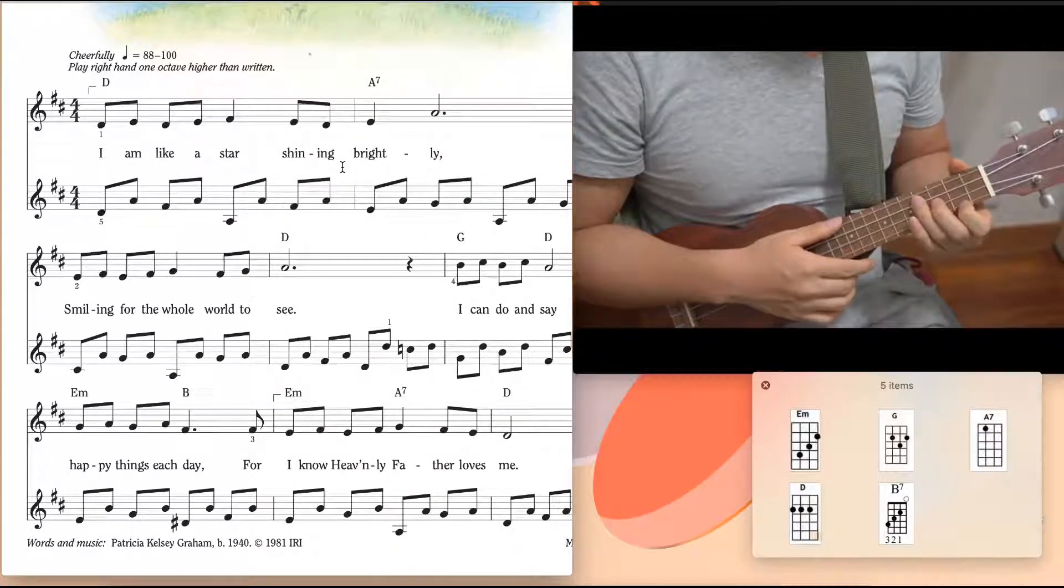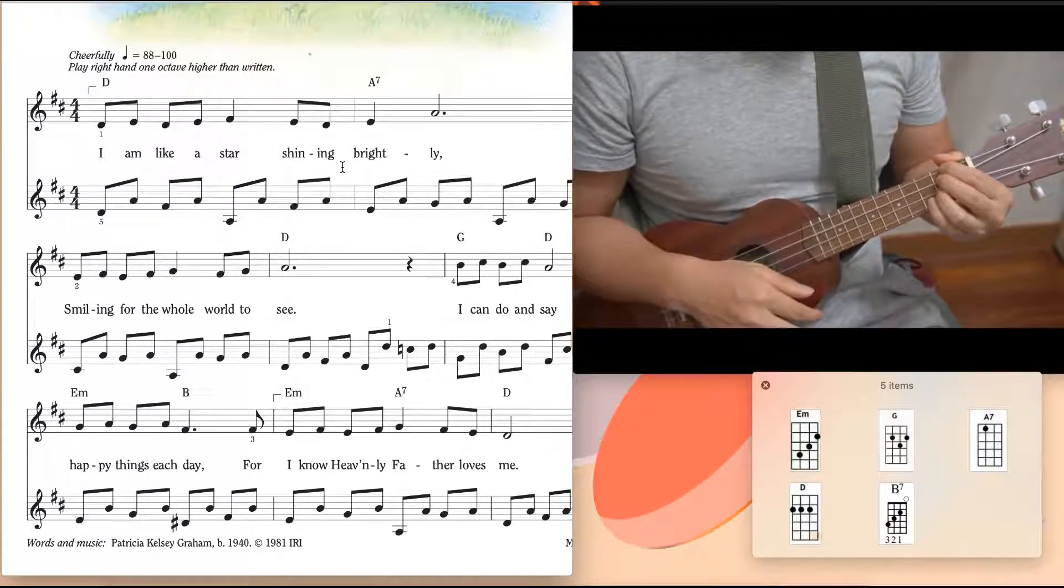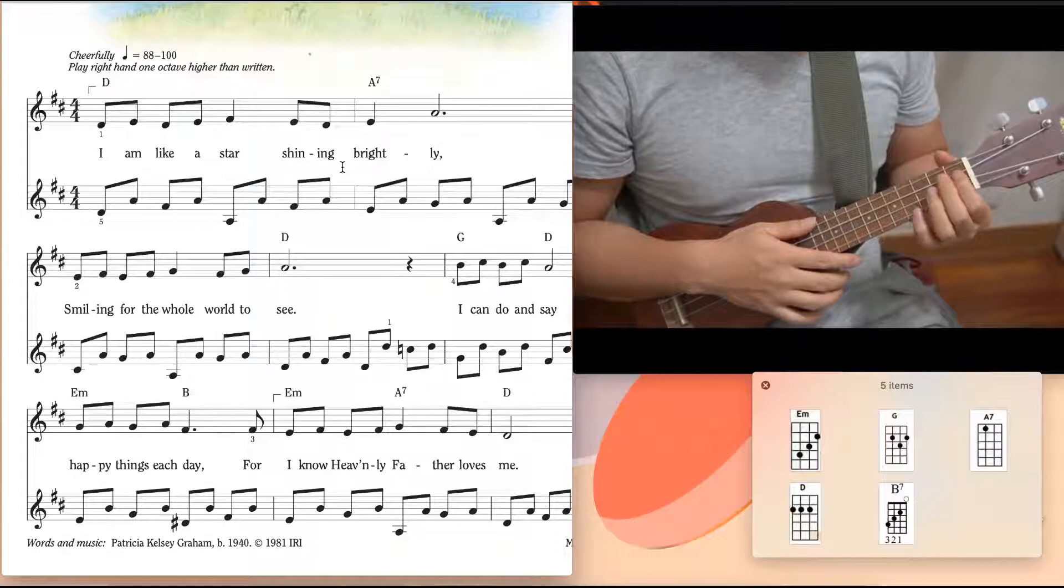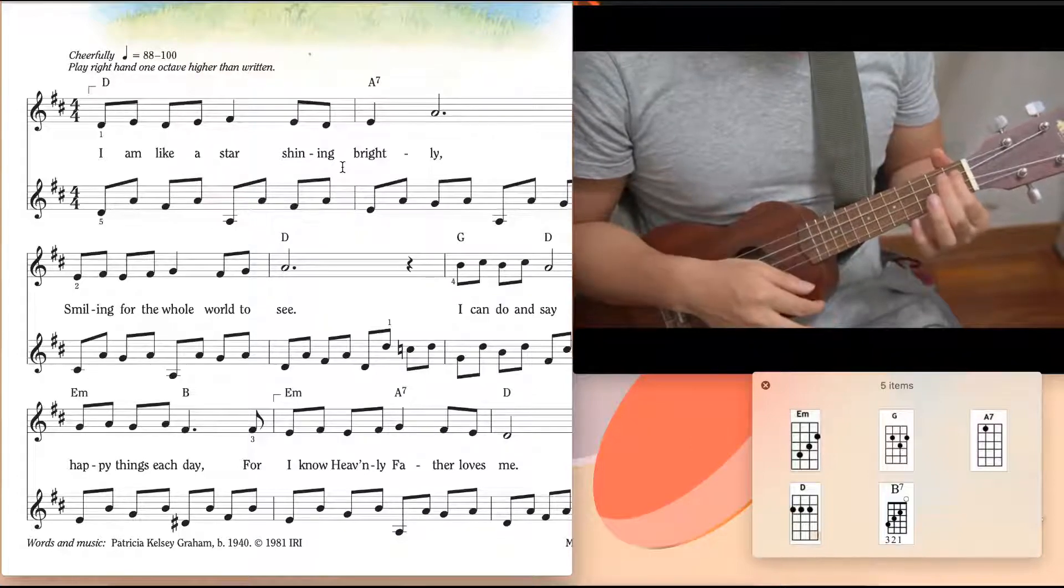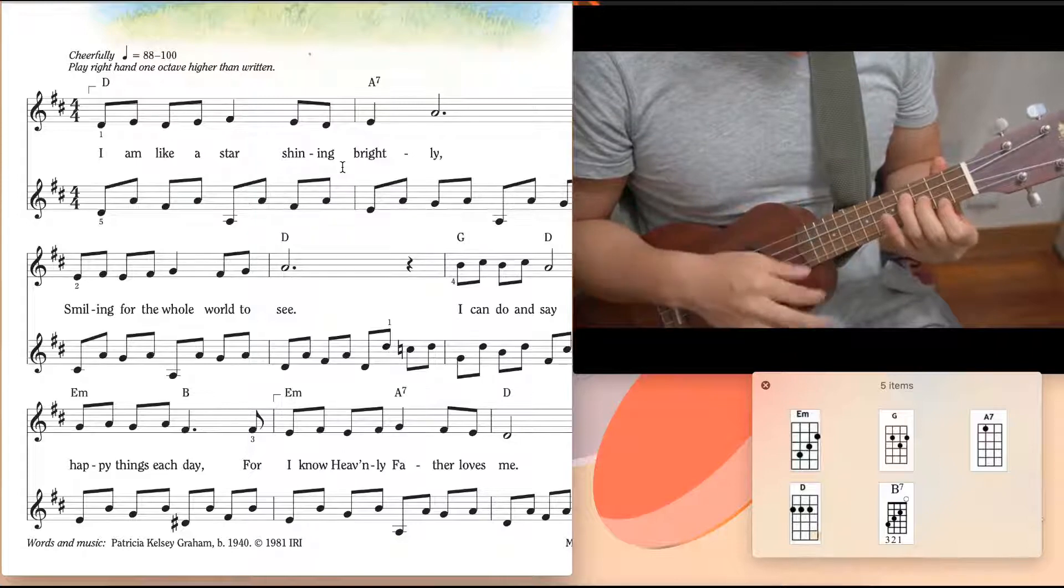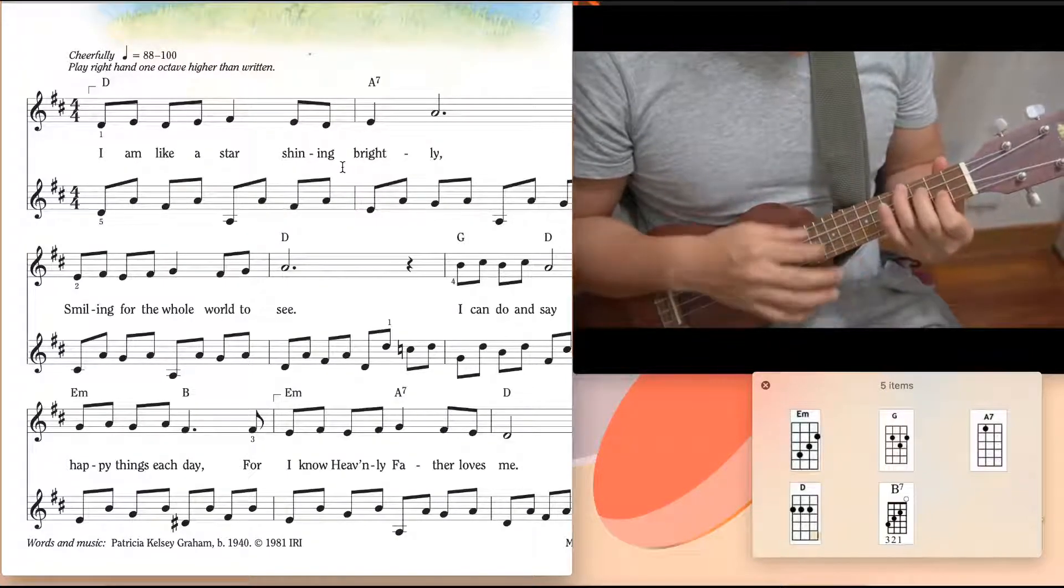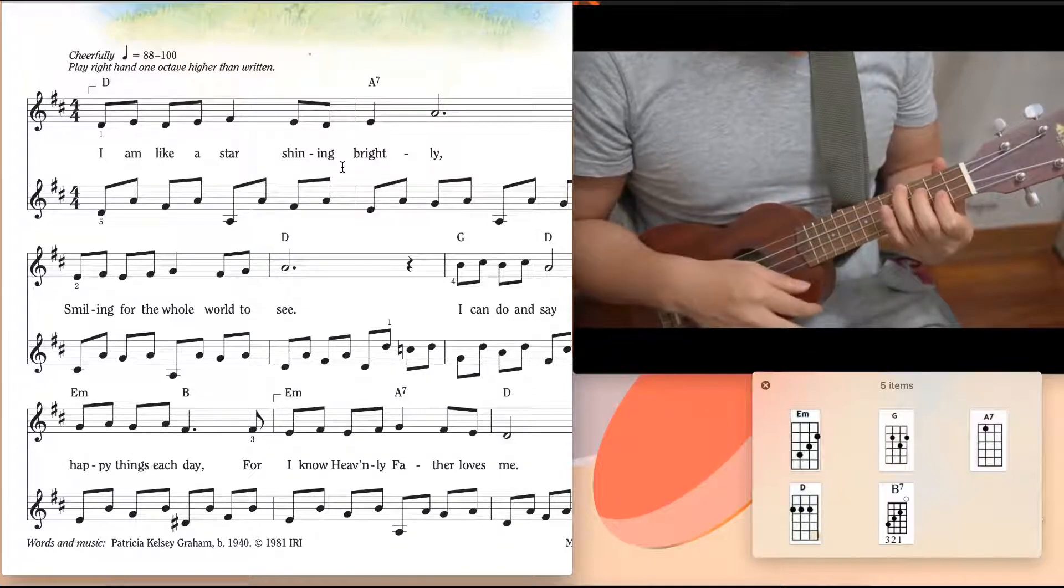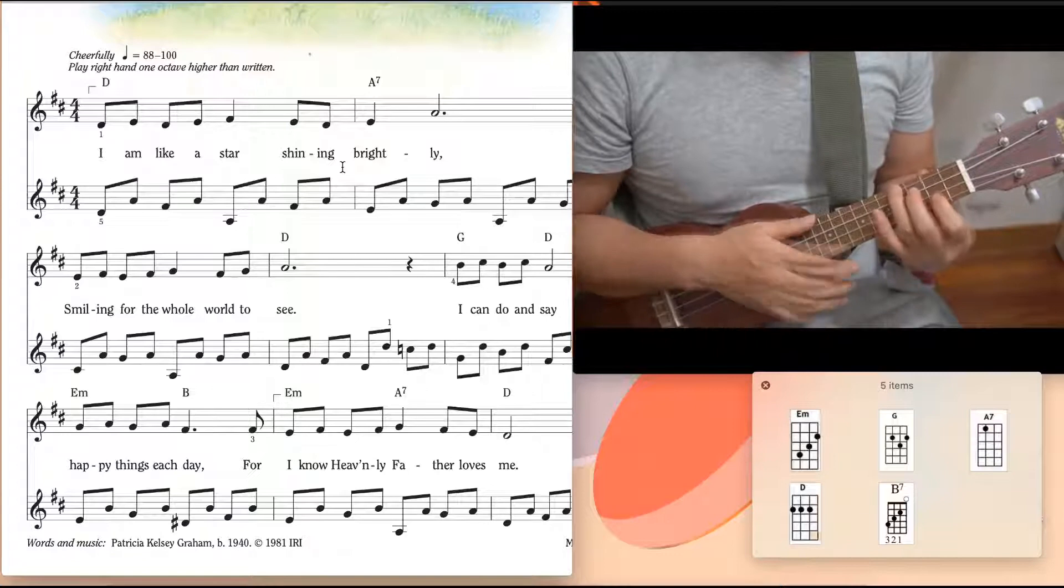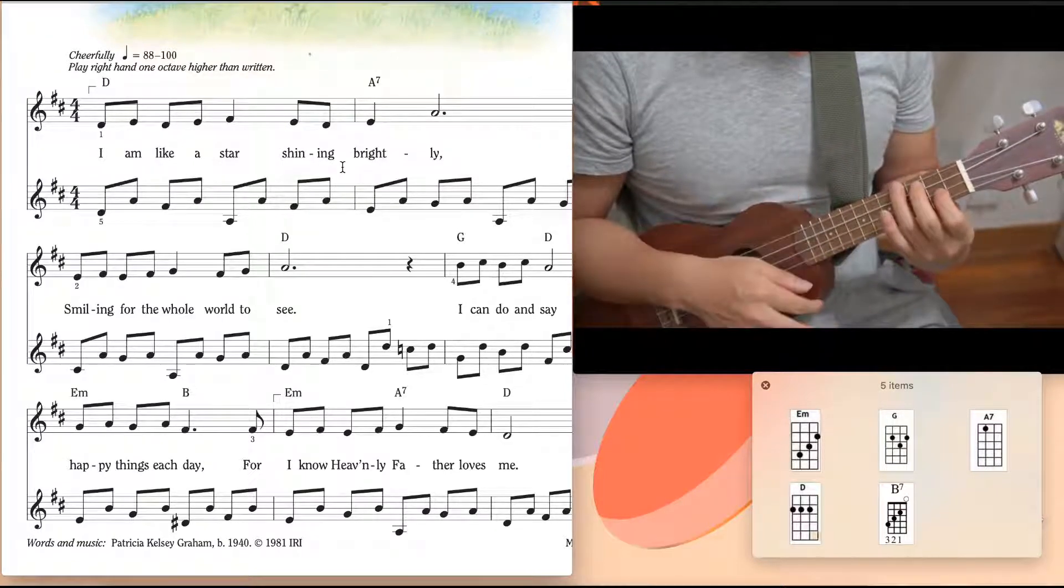Let's play I Am Like A Star. D chord, A7, E minor, G, and B. I use B7, this B7, instead of B bar chord, so it's easier to play B7. E minor, then B7.